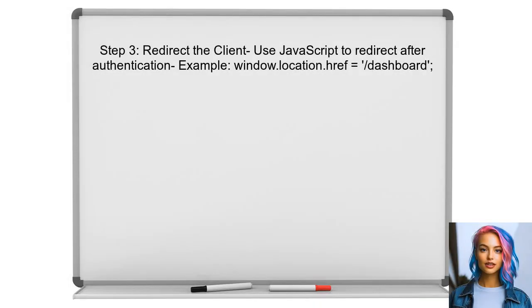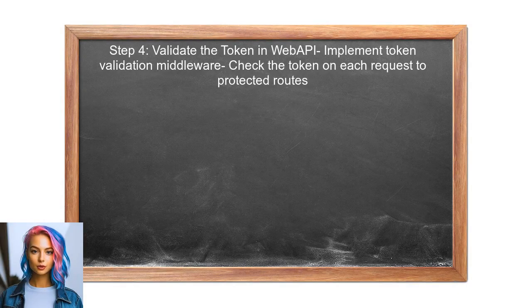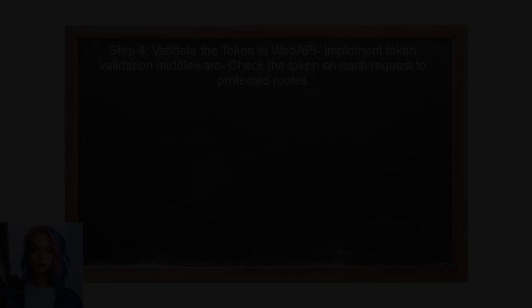After storing the token, the user should redirect the client to the desired page. This can be done using JavaScript to ensure a smooth transition after authentication. Finally, the user needs to ensure that the web API validates the token on each request, confirming that the user is authenticated before accessing protected resources.